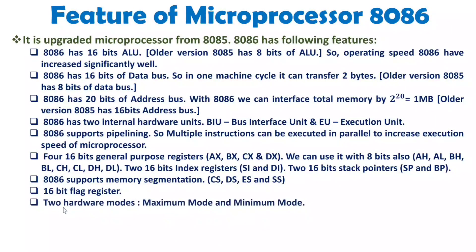When we talk about hardware mode, 8086 operates in maximum mode and minimum mode — a feature not available with 8085. In maximum mode, we can operate 8086 with multiple processors. In minimum mode, a single 8086 will function. So this feature allows execution with multiple microprocessors together, which was not available with 8085.